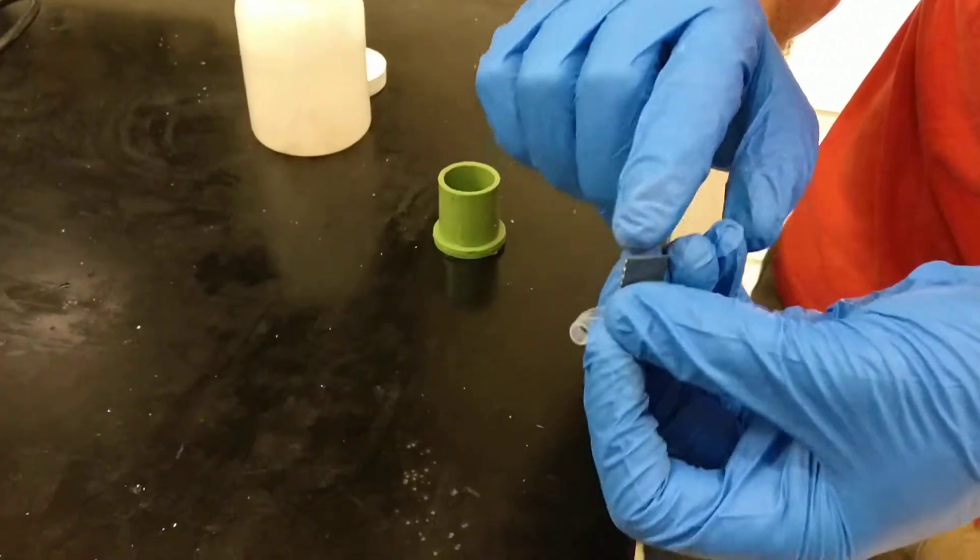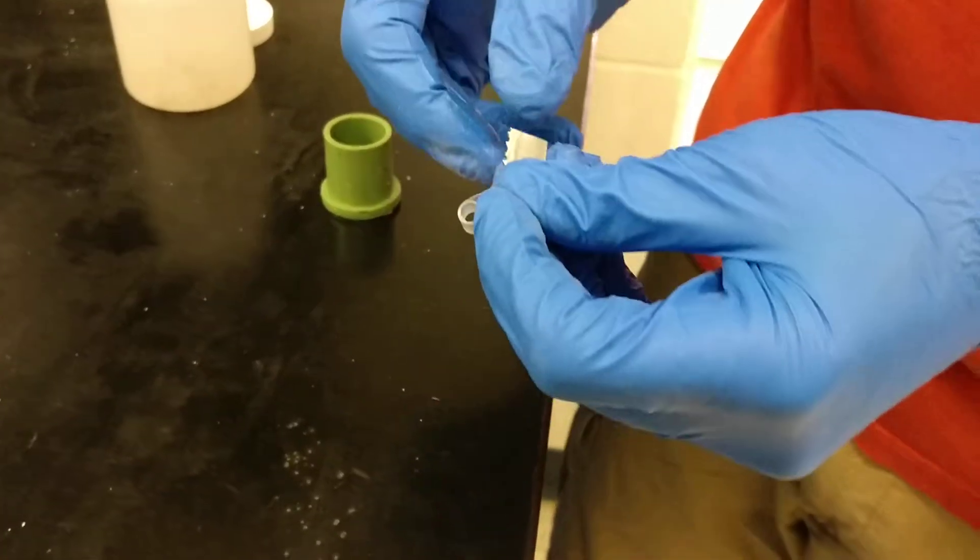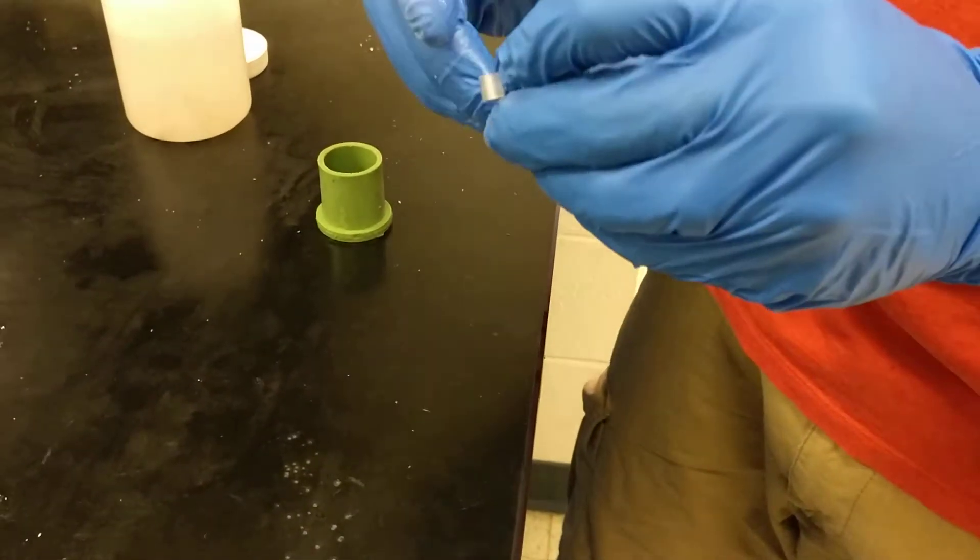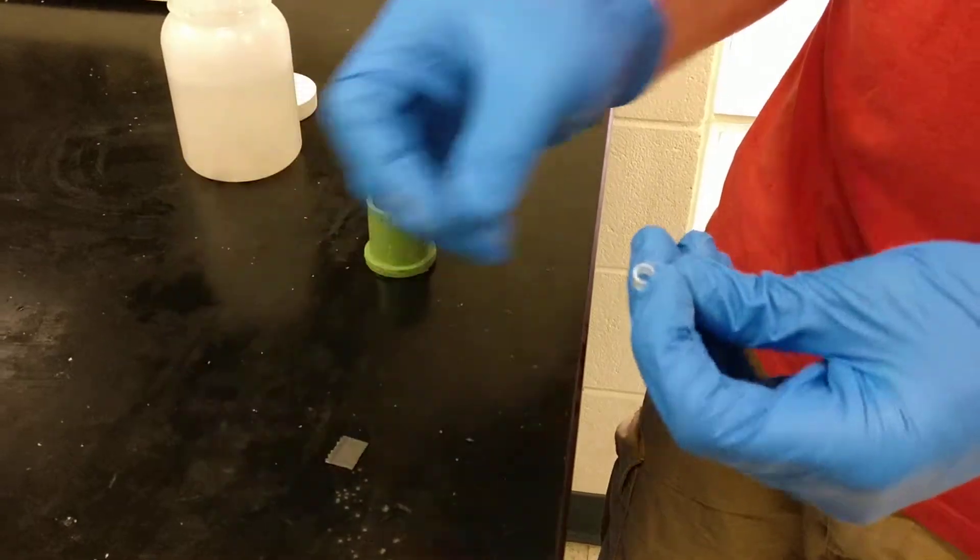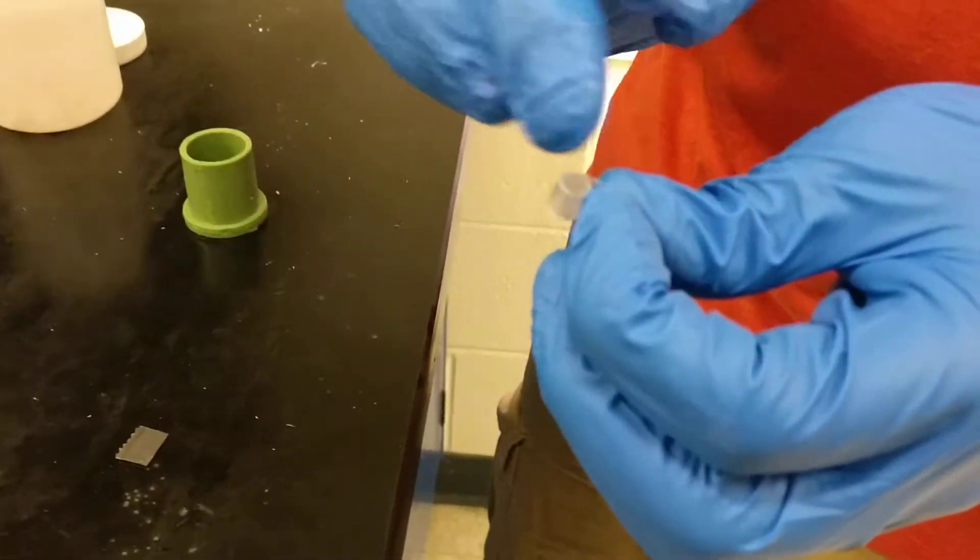If I want to get a cross section of the sample, so if I want to look at this surface, I need to hold it that way inside the cup. So they have these little plastic clips, and they just come as little circles.